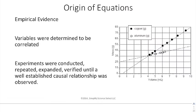The key thing is that the origin of all equations is based on empirical evidence, which means the variables were determined to be correlated, which means they moved together. After that, experiments were conducted, repeated, expanded, verified, until a well-established causal relationship was observed. The whole reason behind developing an equation is to be able to predict what the relationship is without actually having to do the experiment.